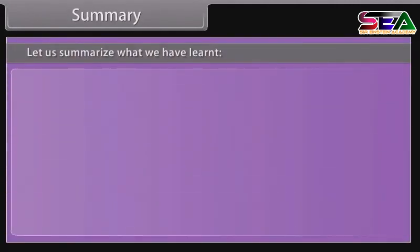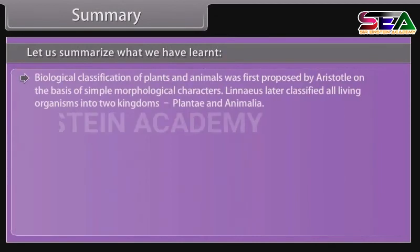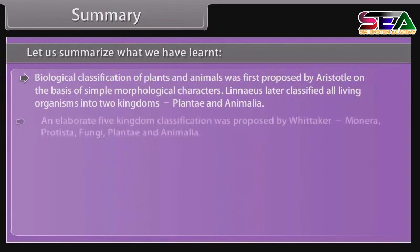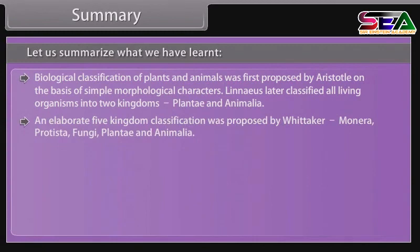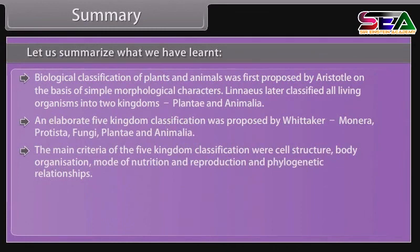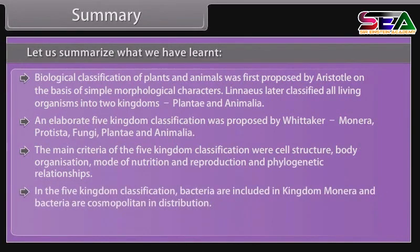Summary. Biological classification of plants and animals was first proposed by Aristotle on the basis of simple morphological characters. Linnaeus later classified all living organisms into two kingdoms: Plantae and Animalia. An elaborate five-kingdom classification was proposed by Whittaker — Monera, Protista, Fungi, Plantae, and Animalia. The main criteria of the five-kingdom classification were cell structure, body organization, mode of nutrition and reproduction, and phylogenetic relationships. In the five-kingdom classification, bacteria are included in kingdom Monera, and bacteria are cosmopolitan in distribution.